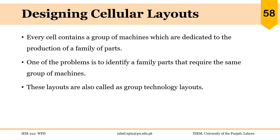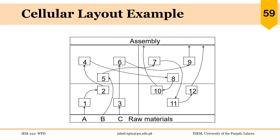Welcome back. One important type of layouts are cellular layouts. In these layouts, every cell contains a group of machines which are dedicated to the production of a family of parts. One of the problems is to identify a family of parts that require the same group of machines. These layouts are also called group technology layouts. In this factory there are total eight parts being manufactured, with 12 machines, and different parts are made using these machines and finally moved to the assembly area.